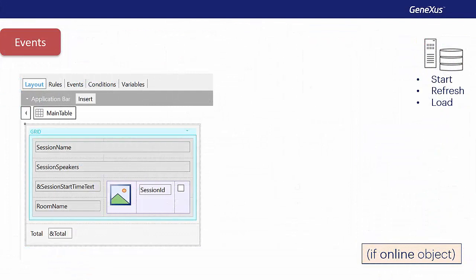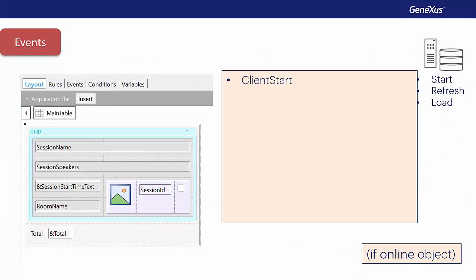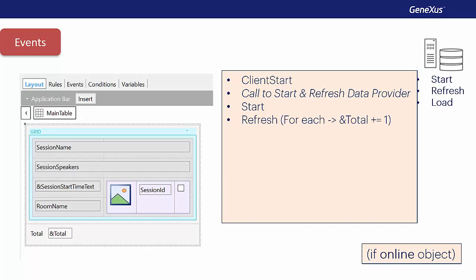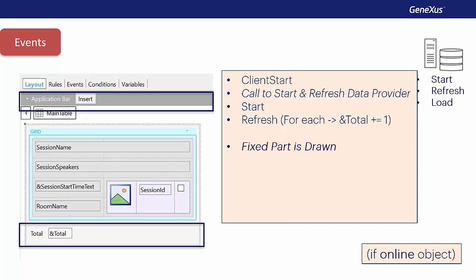Now let's look at what has occurred. Client start was executed. At this point, the call was made to the data provider that solved for the fixed part, which recovered the result of the for-each on the session table where the count was made. Then start was executed, followed by refresh, where the total variable was increased — this is optimized and will have the result of the table count directly because it was returned by the data provider. Then the fixed part was drawn, and now the value of the total variable is nine. The data provider associated with the grid was called, the load event was executed n times, and then the grid was drawn.